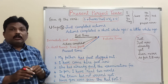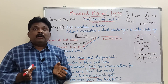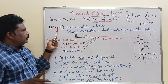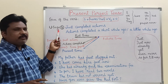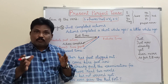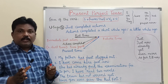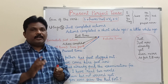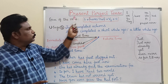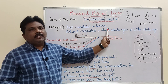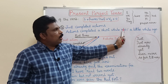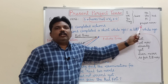Now coming to the most important part: the usage. When do we use present perfect tense? The first usage — present perfect tense is used to express just completed actions, or actions completed a short while ago or a little while ago.